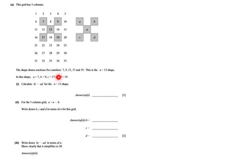The shape drawn encloses 5 numbers: 7, 9, 13, 17 and 19. And they call that the n equals 13 shape. So they have this grid, this 5 shape if you like. When n is in the middle and puts it on 13, they call that the n equals 13 shape. If we moved that grid and put the middle on, let's say 22, then they will call that the n equals 22 shape. This is an investigation question, so we have to analyze the situation and then answer questions about it.